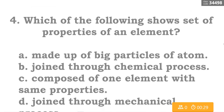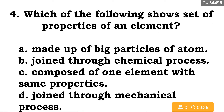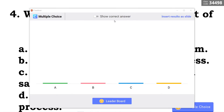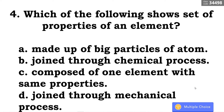Let's proceed with question number four. Which of the following shows the set of properties of an element? A. Made up of big particles of atom, B. Joined through chemical process, C. Composed of one element with same properties, D. Joined through mechanical process. The correct answer is letter C — composed of one element with same properties.